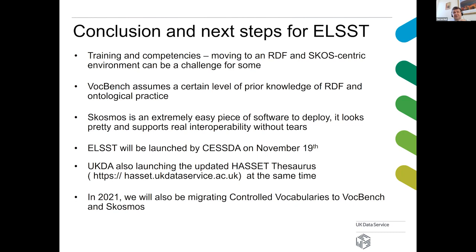SKOSMOS has been a dream really — it's just been so simple compared to the tooling we had to use before, so we're really happy about it. It means that when we go live we can actually publish the URIs and encourage our user community to start using them, which will really promote and support interoperability. At the same time we'll be launching HASSET on November the 19th as our English-language thesaurus. Once we've got that live in November, the next step is to look at SKOSMOS to support not just thesauri but also controlled vocabularies, which at the end of the day are just simple tree structures — something we're going to be looking at in 2021. Overall, a great product — and I hope that's been a little bit helpful to give you some user perspective on how SKOSMOS works for us.